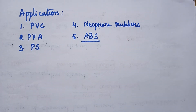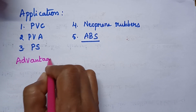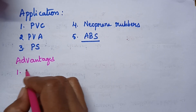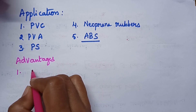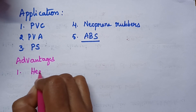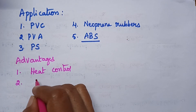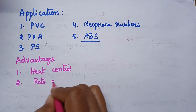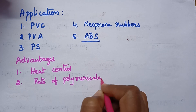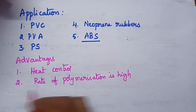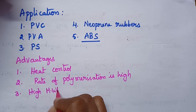Coming to the advantages of emulsion polymerization, this technique is highly useful for heat control — efficient heat control is possible through this technique. At the same time, the rate of polymerization is high, and it results in the formation of high molecular weight polymers.